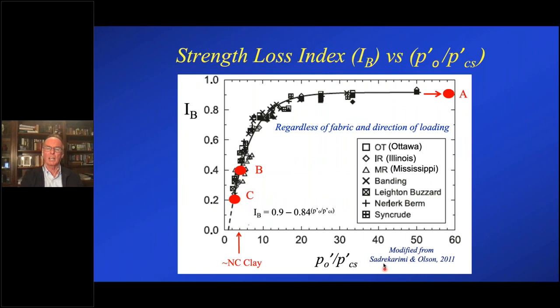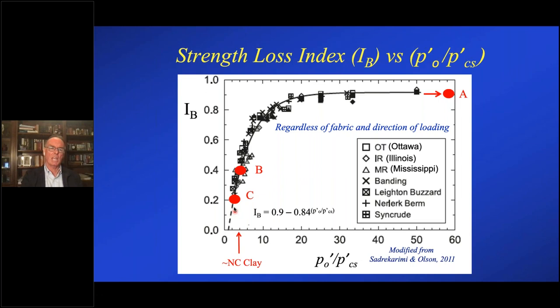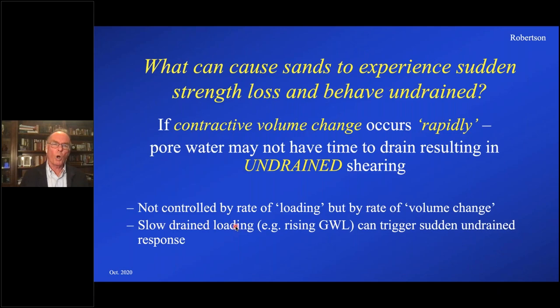This is reflected in a diagram that Sadrekarimi and Olson put together — there's also a similar plot in the Jefferies and Bean book. They plotted in terms of state parameter divided by the slope, but there's a little bit more scatter there, mainly because of uncertainty in selecting the appropriate slope. Sadrekarimi and Olson chose to use the stress ratio, and you can see the data has a tighter fit. This relationship is independent of how the sample was made — independent of initial fabric and direction of loading. Normally consolidated clays typically have a ratio of around three or four, with maybe 10–20% strength loss, or sometimes no strength loss at all.